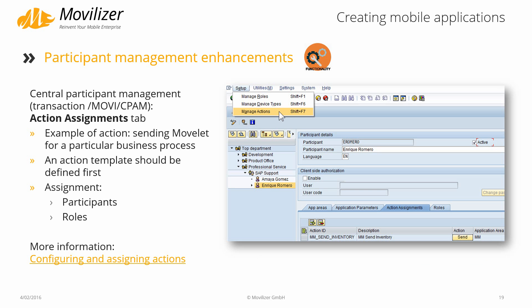The Movilizer participant management transactions also got new enhancements. In the CPAM you are now able to manage and define actions. Actions are something like sending out a movlet for a particular business process to a participant in the CPAM. An example would be the notification creation scenario, where movlets are usually sent out once to a participant and then reside on the device for a longer period of time. The CPAM actions are the approach to handle the sending of such movlets.